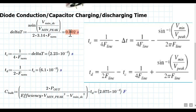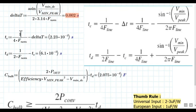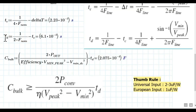Now calculate the capacitor charging time TC using the formula: TC = 1/(4 × F_line) − delta T. Substituting the delta T value gives TC = 2.23 milliseconds. Then calculate the discharging time TD using: TD = 1/(2 × F_line) − TC. Applying this formula gives TD = 6.1 milliseconds.